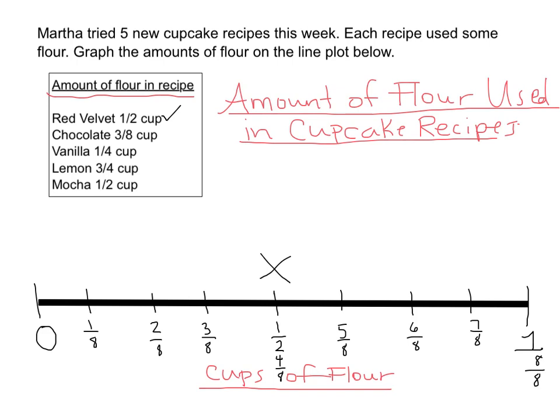Chocolate was 3/8, so I'm going to make a similar-sized X over the number 3/8 and I've taken care of that one. One fourth. Well, that's not listed on my graph, but I know that 1/4 is the same thing as 2/8, so I'm going to put that right there. Check that off.